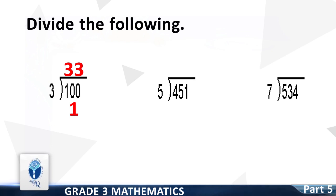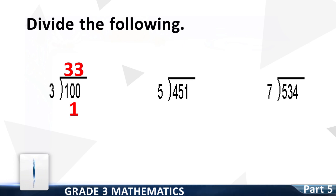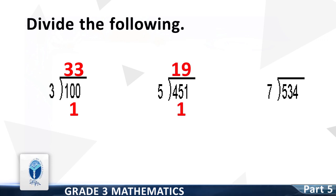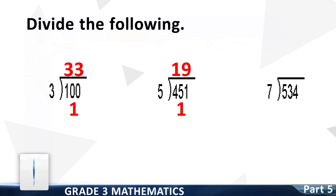The next question is 451 divided by 5. Good, the correct answer is: quotient 90, remainder 1.